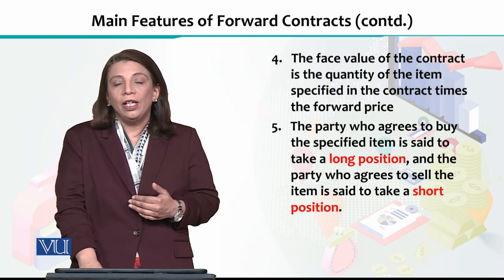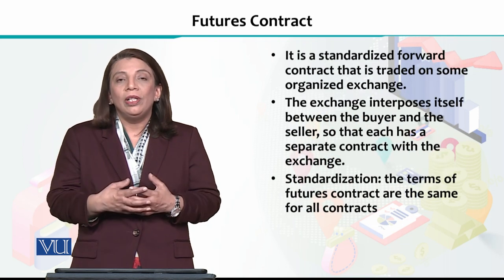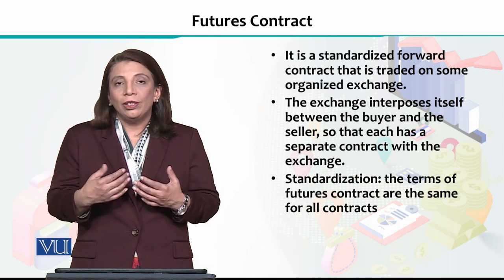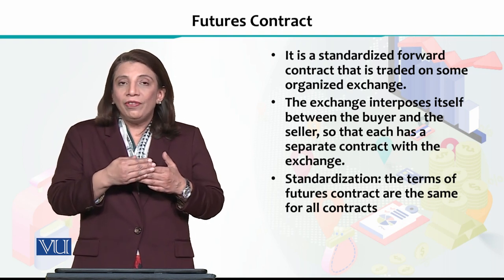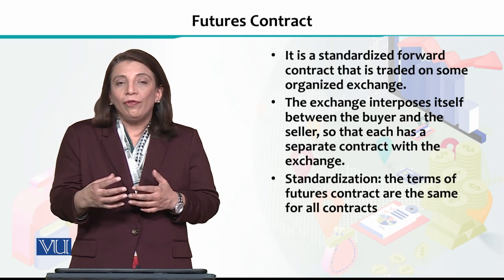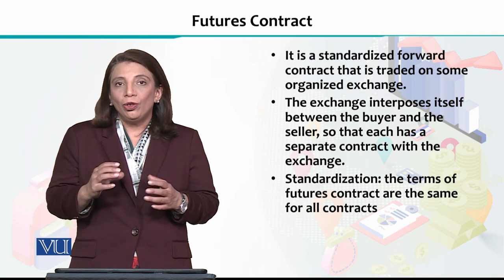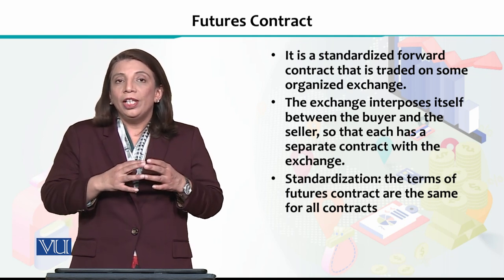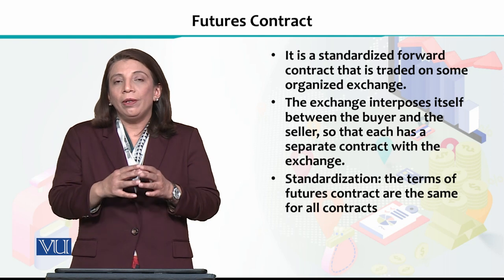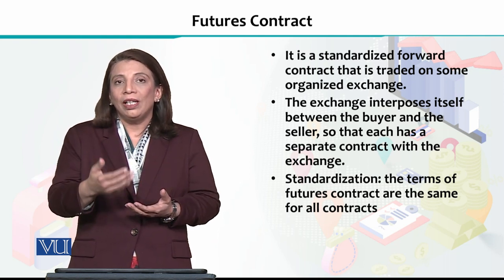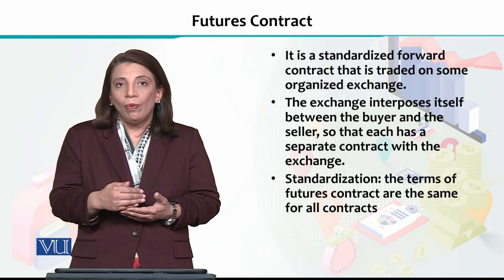When we are dealing with derivatives and forward contracts, we have to understand these two concepts — long and short position — that are used to explain the different types of contracts we are dealing with in futures or forward contracts. A forward contract is any contract related to exchanging something at a future date, agreed upon now, and we call that a forward contract.